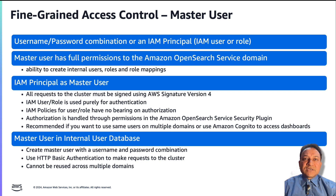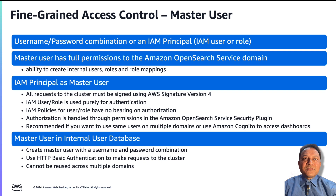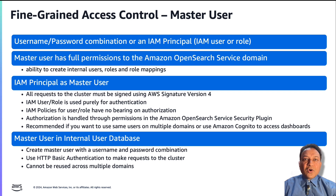The second way is a master user in the internal user database with a username and password combination. You can use HTTP basic authentication as well as IAM credentials to make requests to the cluster. The internal user database is stored in an Amazon OpenSearch Service index, so you can't share it with other domains. We recommend the internal user database if you don't need to reuse across multiple domains, want to use HTTP basic authentication for dashboards, or have clients that only support basic authentication.